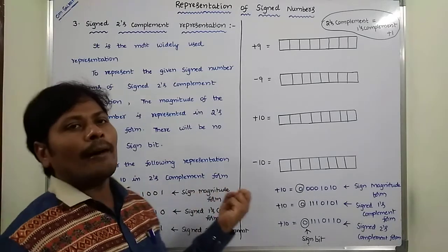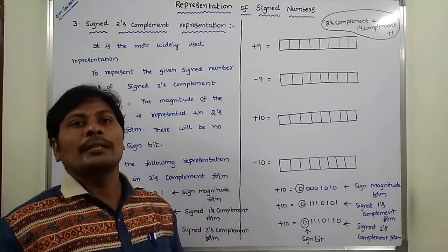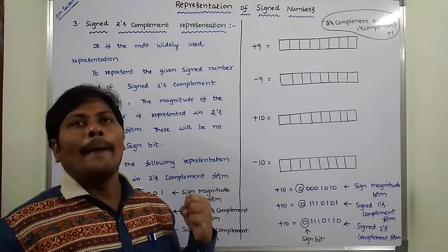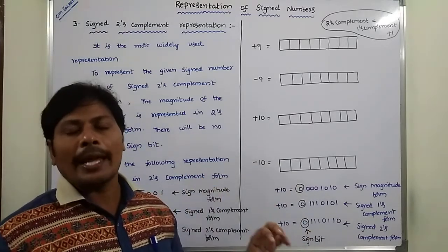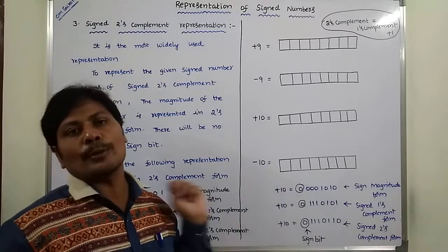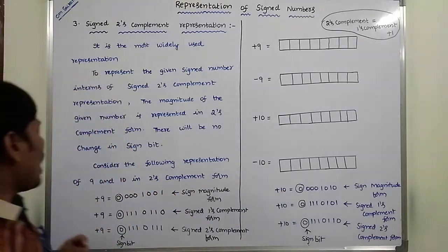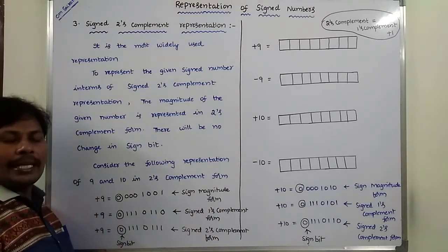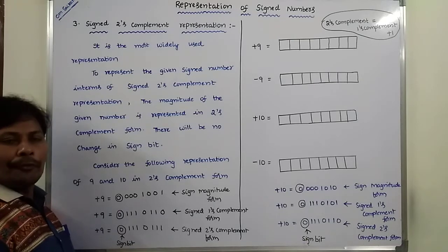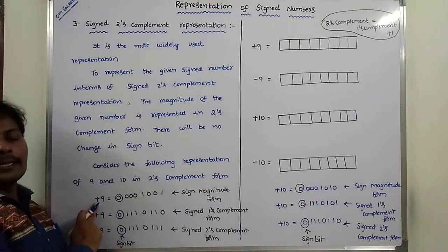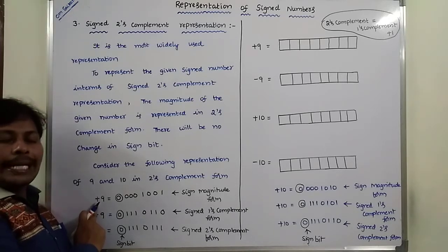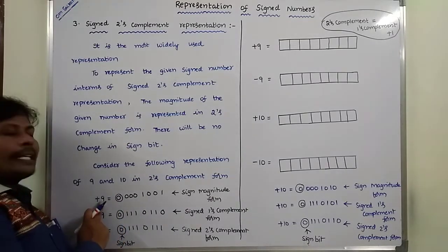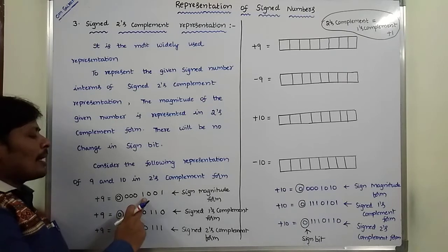Now consider the decimal values plus 10, minus 10, plus 9, and minus 9, which can be represented in two's complement form. First, consider plus 9. Plus 9 can be represented in signed magnitude form. Since it is positive, we have to put 0 at the MSB position as the sign bit. The magnitude, 9, can be represented in binary form as 1001.